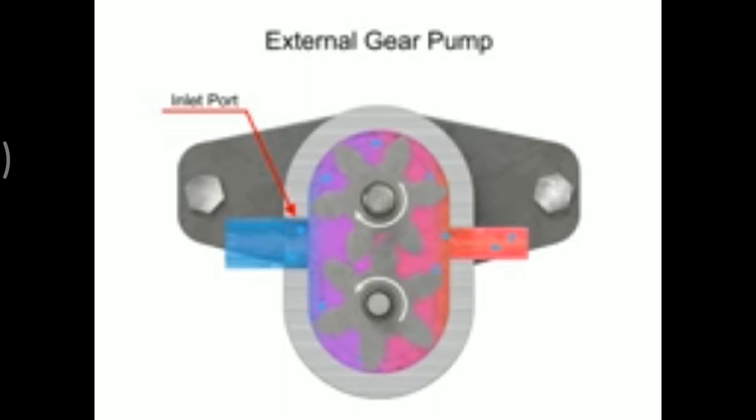As the gears rotate, a flow path is created around the outside of each one. Fluid trapped in the slots between teeth is carried around and discharged into the cavity with the outlet port. Meshing of the teeth in the center of the pump seals the outlet port from the inlet port. No fluid passes between the gears.